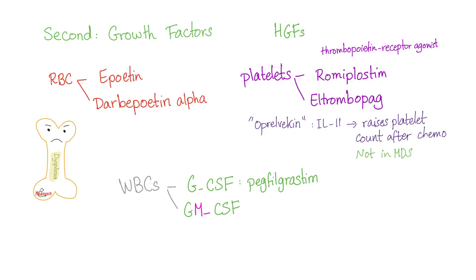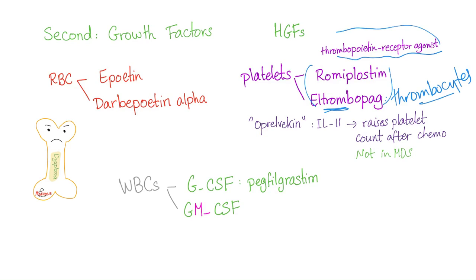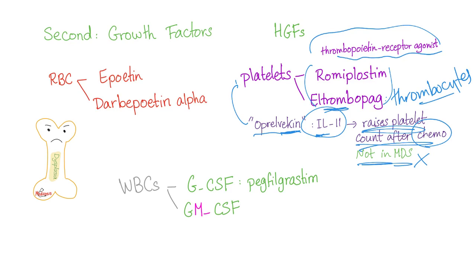Second: growth factors in detail. For red blood cells to treat anemia, use epoetin (similar to erythropoietin) or darbepoetin alfa. To boost platelets, use romiplostim or eltrombopag — these are called thrombopoietin receptor agonists. There is also a drug called oprelvekin, an interleukin-11, which raises platelet count after chemotherapy but not in MDS specifically — mentioned because it is similar to thrombopoietin receptor agonists.